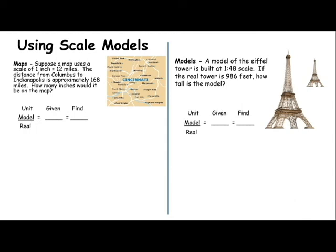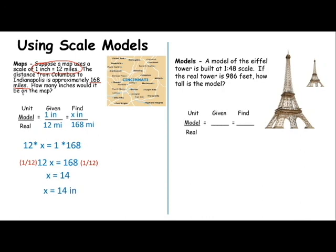Once again, pause the video. Try these on your own. I'm going to start working them faster and faster assuming that you were working them on your own and you're just checking your answers when I describe it. You have a map. The map gives you a scale of 1 inch to 12 miles. That's your given. The distance is 165 miles. That's the real distance. How many inches would it be on the map? That is your model. Cross products. Go ahead and simplify using the means extremes property. You get x equals 14. So 168 miles would appear as 14 inches on the map.